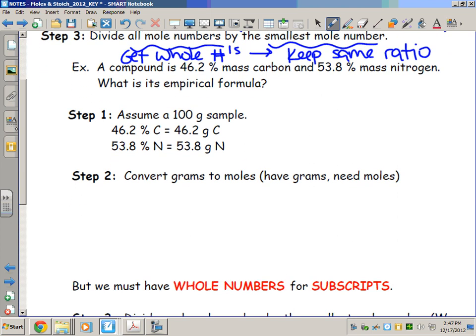Let's go through an example. Take a compound that is 46.2 percent by mass carbon and 53.8 percent by mass nitrogen. We said that when we do this, since we're dealing with percents, we stick with the number 100. So step one, we're going to start with a 100 gram sample, and that's where we get 46.2 percent would be 46.2 grams carbon, and 53.8 percent would be 53.8 grams nitrogen.